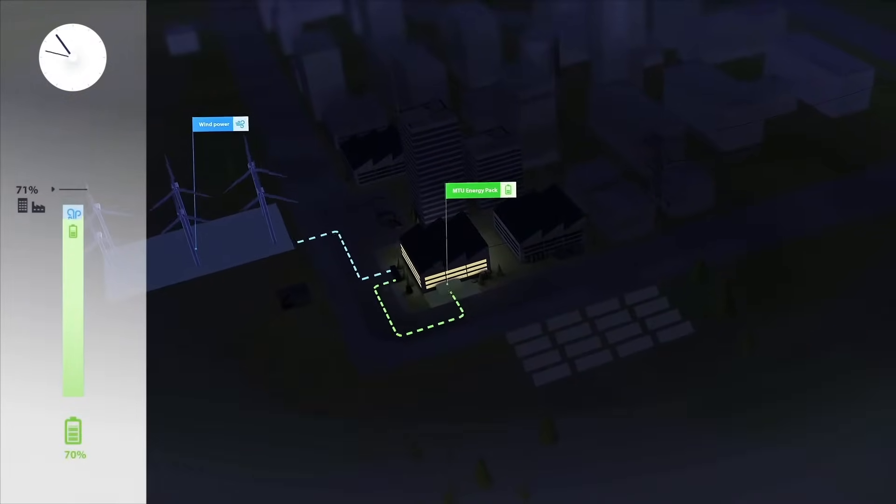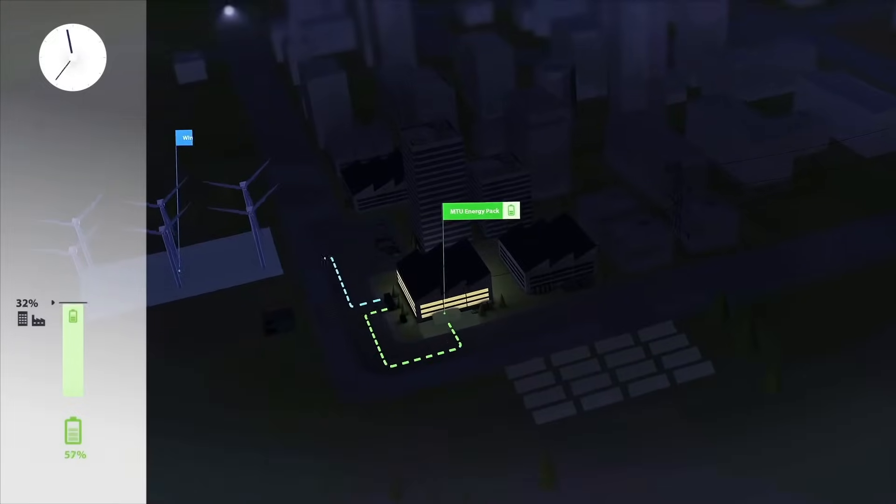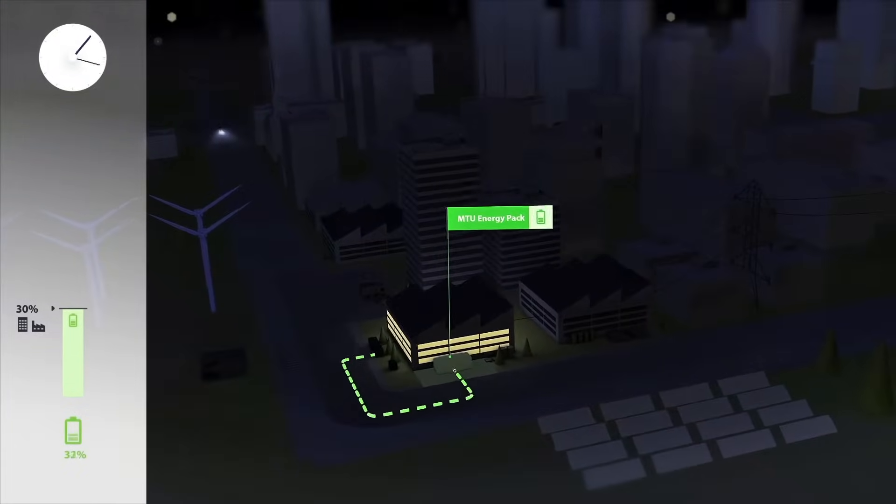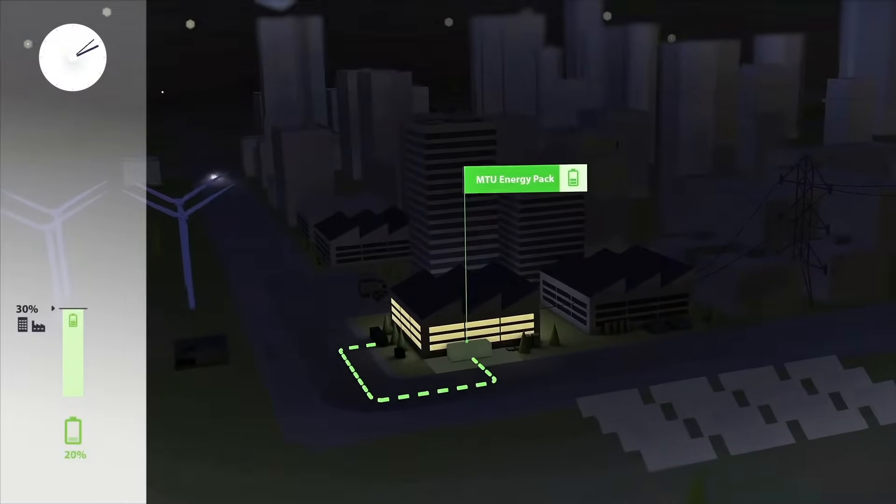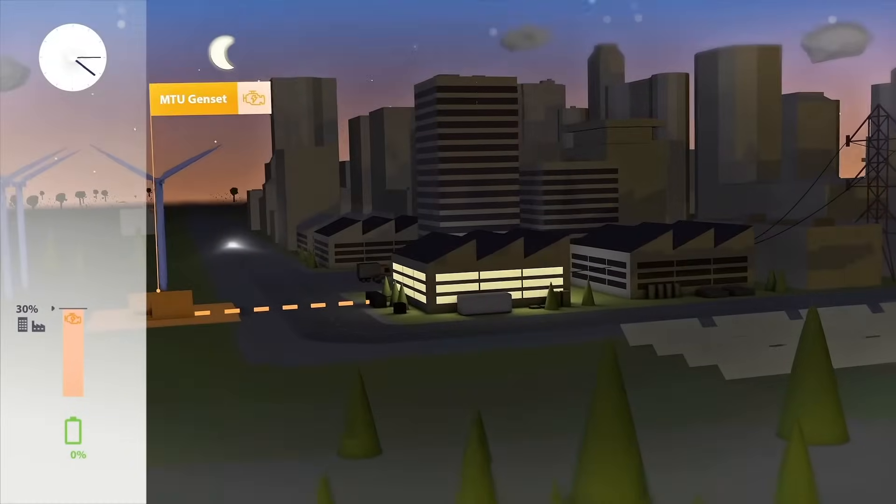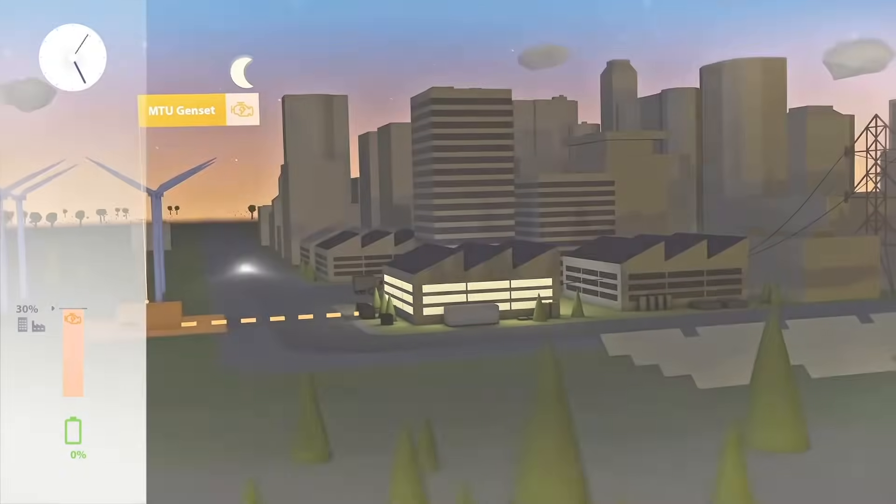Late in the evening and overnight, less energy is obtained from the renewable sources, but much less is also consumed in the factory. The demand can now be covered completely by the battery. Only when it is discharged does the generator provide electricity until the sun rises again.